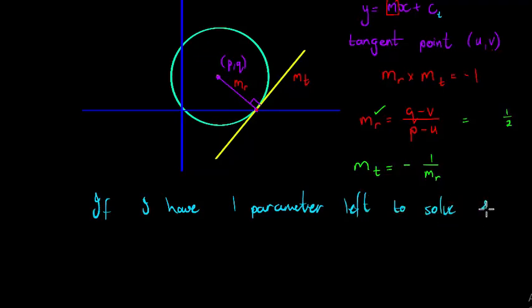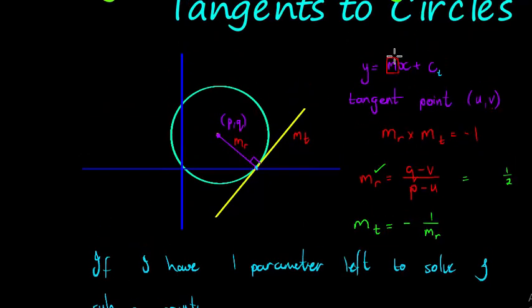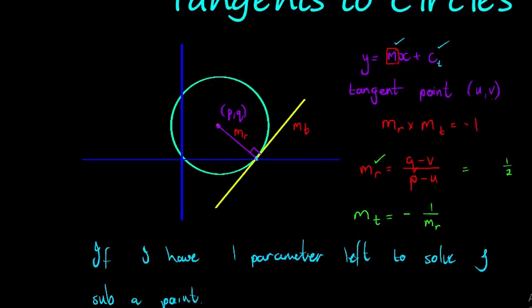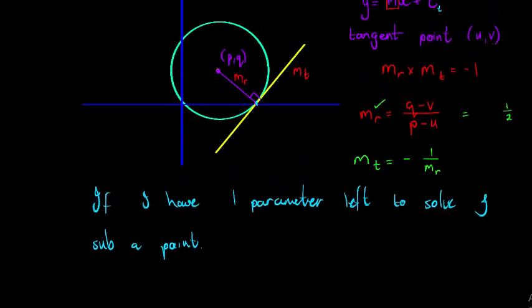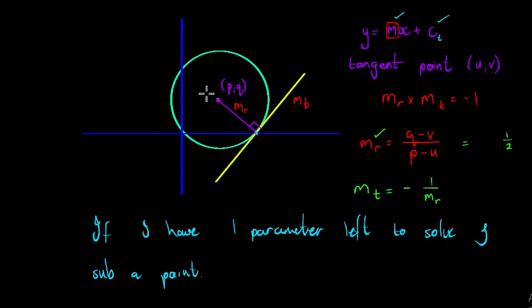Now do I have one parameter left to solve? I've got the gradient, I only need the y-intercept, so yes I've got one parameter left to solve. Which point will I substitute - the center or the tangent point?